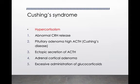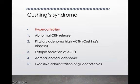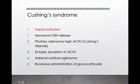Cushing syndrome is hypercortisolism. It can be due to abnormal corticotropin-releasing hormone (CRH) release, whereby more CRH causes more ACTH formation. The same occurs with ectopic secretion of ACTH — for example, tumors of other body parts such as the kidney that also produce ACTH. There can also be abnormality in the adrenal cortex itself, for example adrenal cortical adenoma, which obviously produces more cortisol.